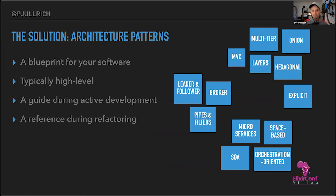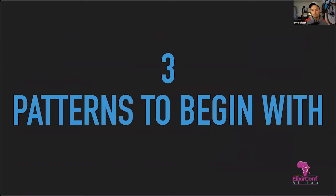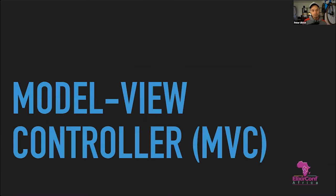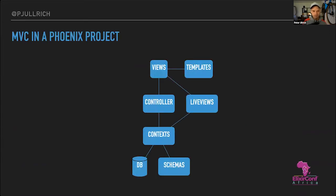An architectural pattern can also be a reference while you refactor. You might have an existing software you want to make nicer — you take an architectural pattern as reference and refactor your software so it looks more like the pattern. So it can serve both purposes. Let me show you three examples of architectural patterns and how they can help you handle the evolution of your software.